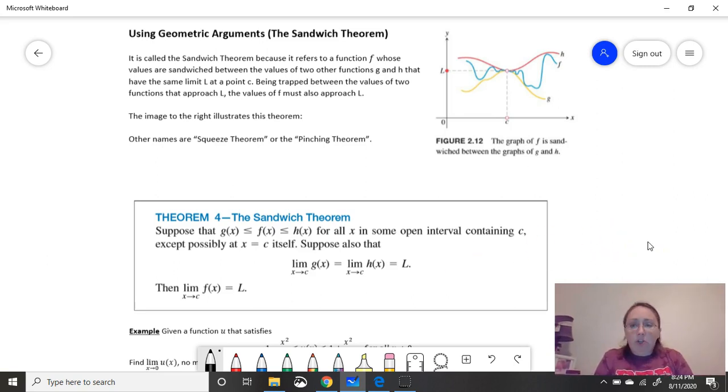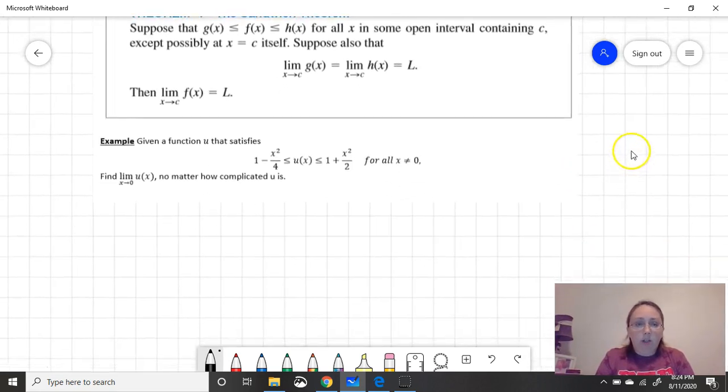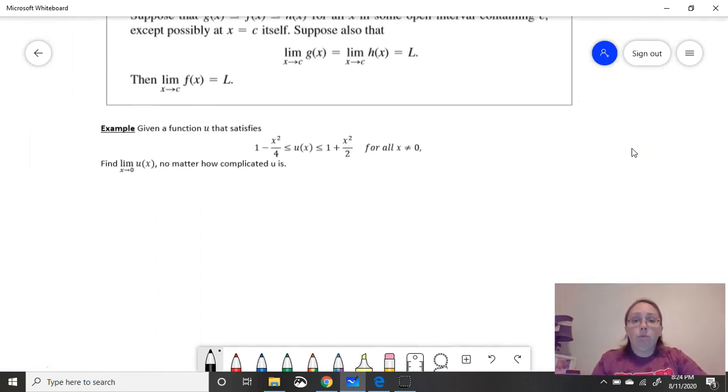So what I want to do is show you an example of what we might ask you to do. And this is actually from our homework. So given a function u, notice we don't actually give you u. We want you to straight up use the theorem for Sandwich Theorem. So given a function u that satisfies this equation, notice u is in between two functions. So we have a function that is greater than. So this function right here is less than u. u is greater than that. So we can think of this as being our g(x). And then over here on the right side, we have a function that is always bigger than the one we're interested in. We're going to call that our h(x).